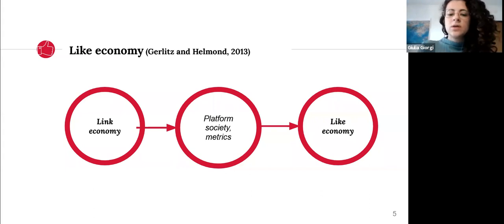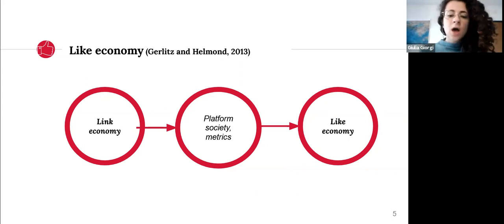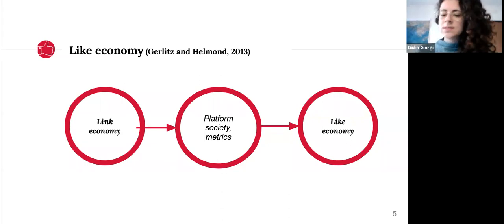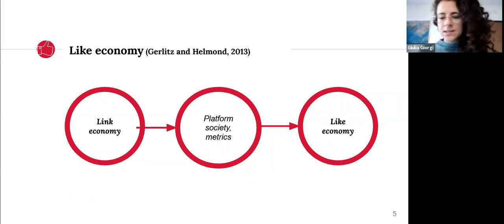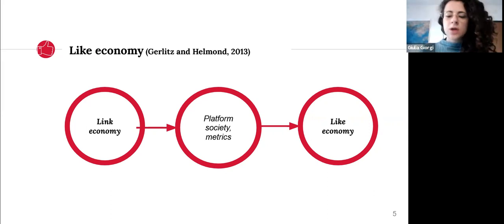This change from link to like economy occurred within the greater phenomenon of platformization of the economic, social, and cultural infrastructures, according to which we can talk about a platform society. The researchers' attention started to be focused on data provided by individual platforms, and the access provided by APIs increased not only the volume but also the complexity of the data collected. To summarize: the gradual platformization of our society prompted a type of research that focused on individual platforms and was based on large datasets.